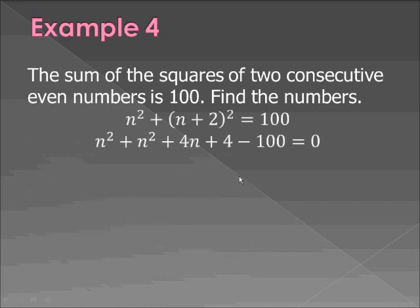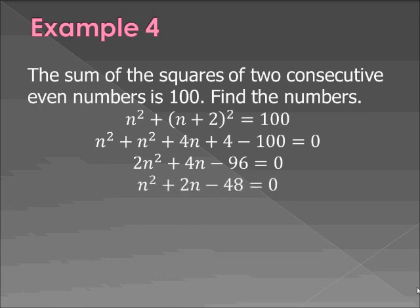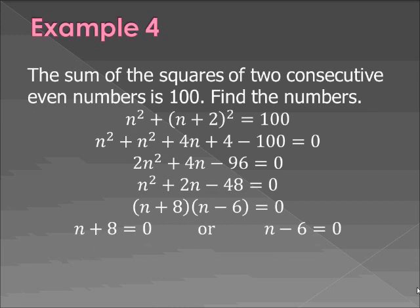So n squared, and then I expanded the n plus 2 quantity squared. n squared plus n squared plus 4n plus 4 minus 100. I moved the 100 over here. Equals 0. Combine all those terms. You get 2n squared plus 4n minus 96 equals 0. I don't like the 2 in the front. And since everything's even, I'm going to divide it out. n squared plus 2n minus 48 equals 0. And again, you just factor. n plus 8 times n minus 6. So n is either negative 8 or 6.